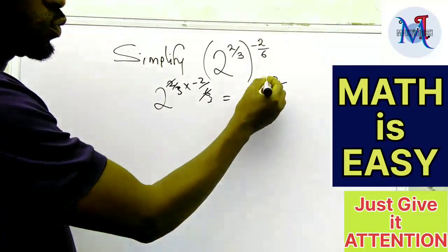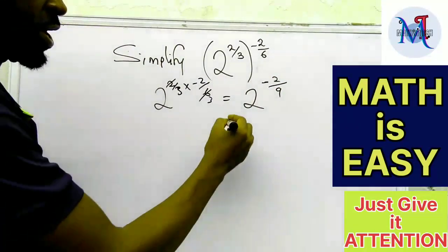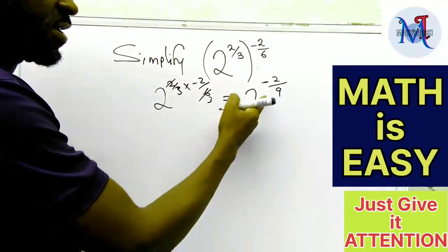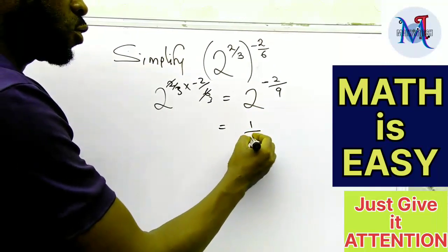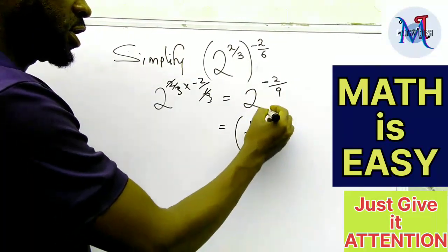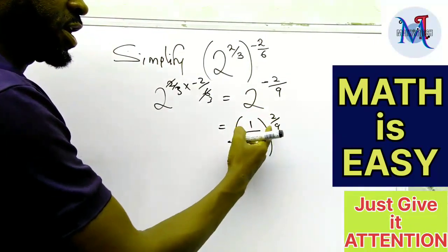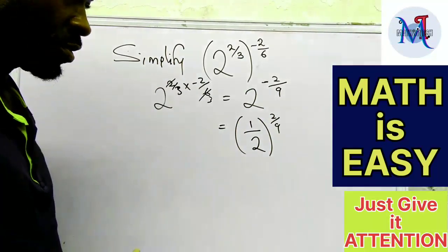Okay, so now we are going to get rid of this minus sign by inverting this. If I invert this, I'm going to have 1 over 2. And then my negative sign is now off.